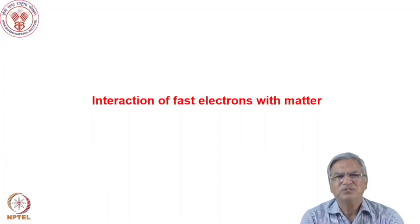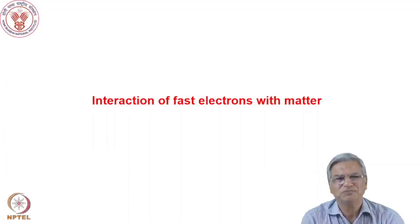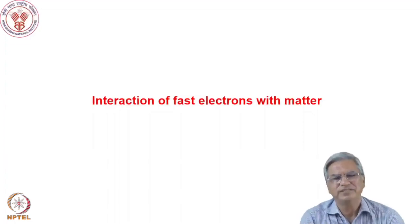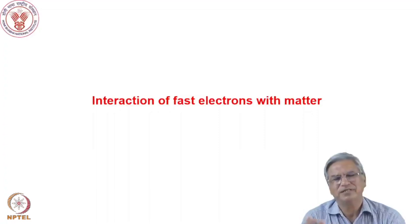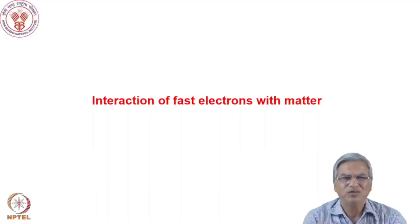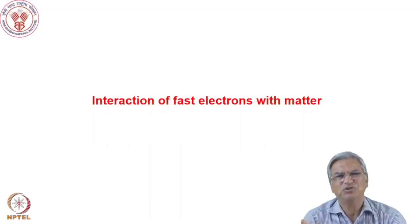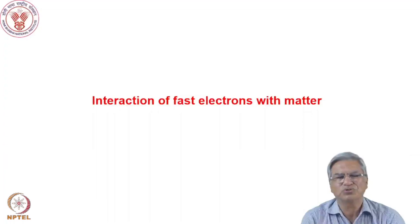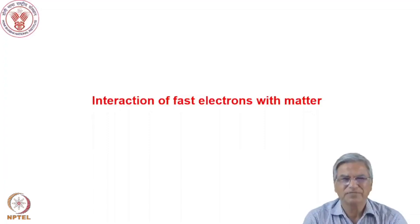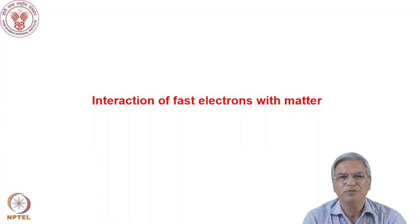Heavy charged particles lose energy relatively much faster because they don't travel far due to higher mass and higher charge. As energy decreases, the stopping power increases, as the Bragg curve signifies. At the end of the range, the velocity of the ion becomes less than the velocity of electrons, the heavy charged particle picks up electrons and stops. At the end of the range, stopping is purely nuclear, but in the beginning, ionization and excitation are the dominant modes of interaction.